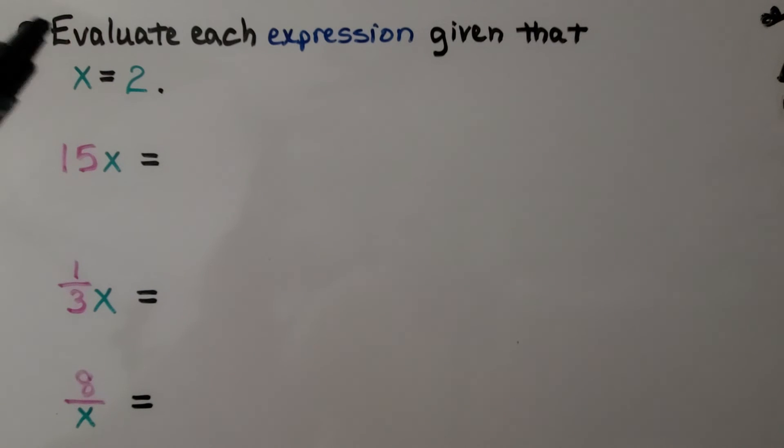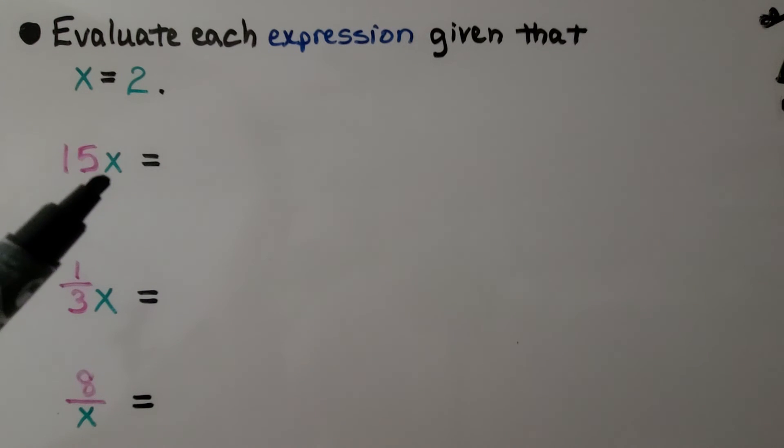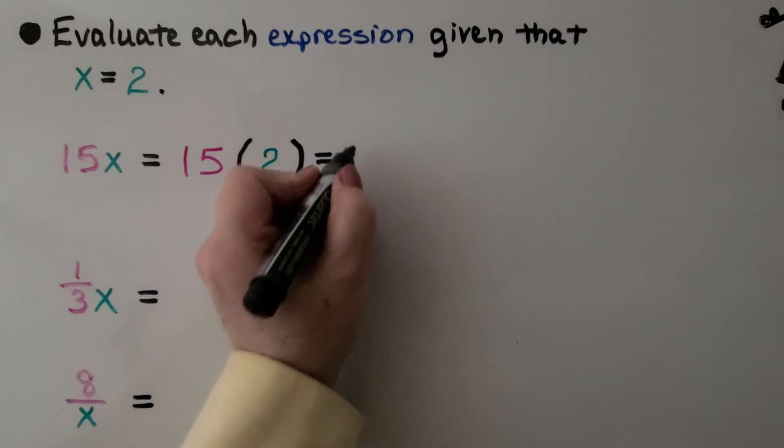It's telling us to evaluate each expression given that x is equal to 2. Well, we know we need to substitute 2 for x. We have 15x. That means we have 15 times 2. And 15 times 2 is equal to 30.